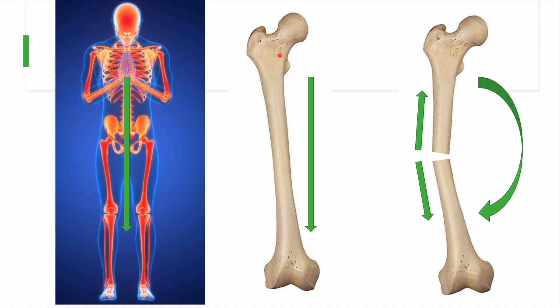Therefore there is eccentric loading — meaning the load on the outer side is in the opposite direction compared to the load on the inner side. Whenever there is a bending force, the inner side gets compressed while the outer side gets distracted.